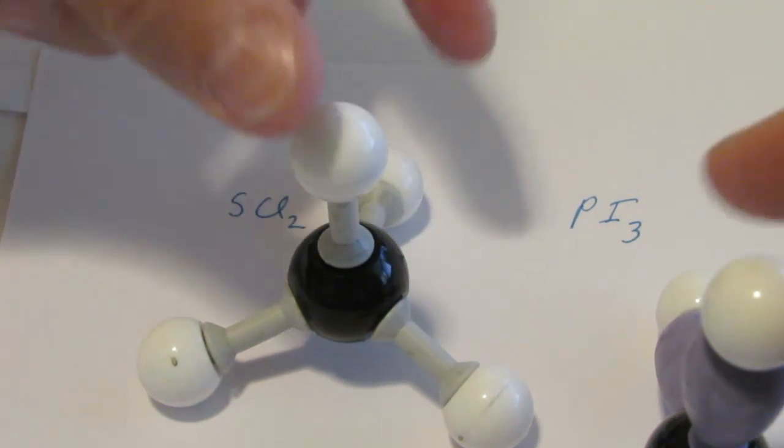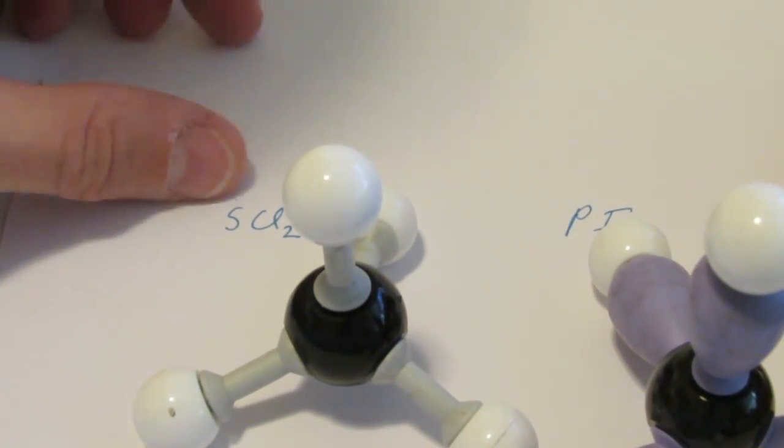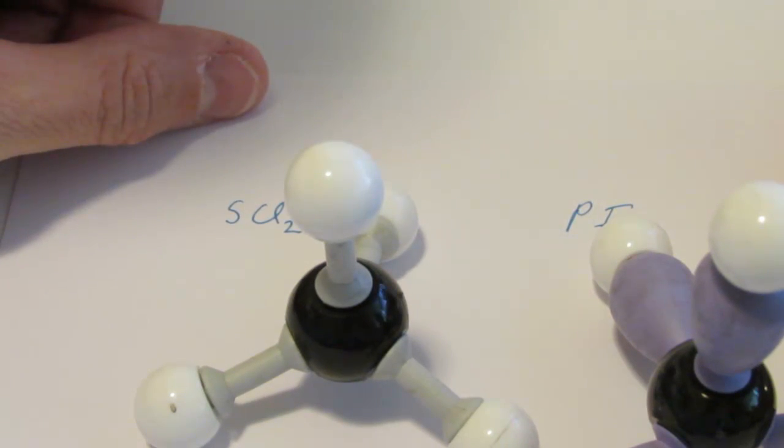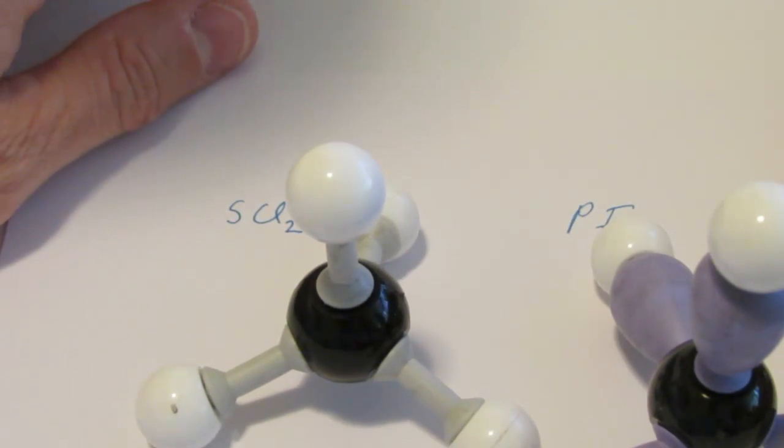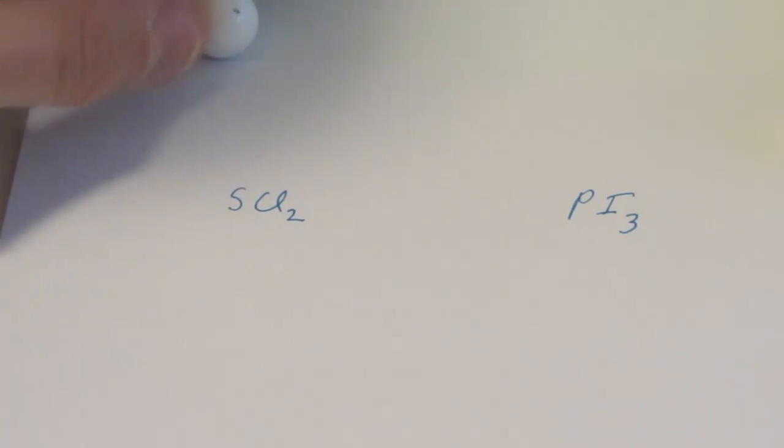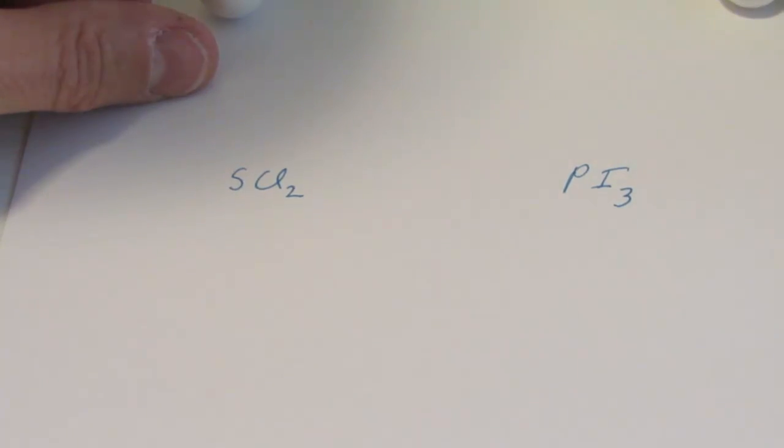Alright folks, I think we're going to take some time today and practice drawing some Lewis structures. I might even lead into a little bit concerning shape and maybe a little bit about bond angle, which is actually coming up in a later lecture. Let's start with SCl2, sulfur dichloride.